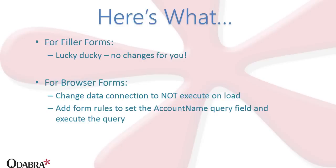To clarify: if you are running your SharePoint 2013 on-premises installation using classic authentication, you will want to change your data connection to not execute on load, and add a form rule to set the account name query field and execute the query for your User Profile Web Service get-username data connection. In this scenario, you need to prepend your domain name and a backslash — so it's domain name backslash username — just like when you sign into your machine. The challenge is what to do if you've got people with different domains.